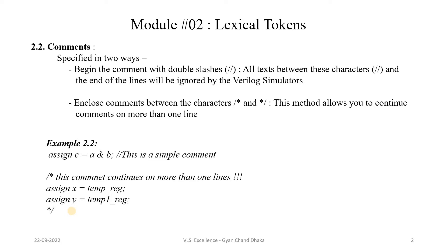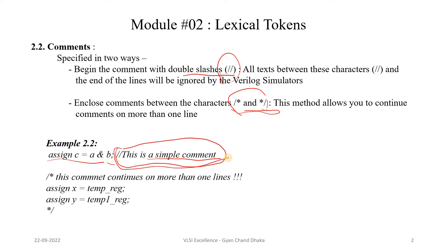The first way is by using the double slash, and the second way is by using the slash-star and star-slash characters. By using the first way — double slash — we can comment a particular single statement. We can only comment one statement; we cannot comment multiple statements using double slash. In this example, on the first line we have 'assign c = a & b' and here we have put a single-line comment using double slash.